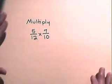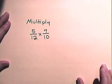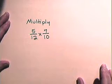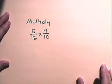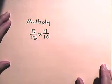Let's begin by doing an example of multiplying proper fractions. Let's multiply 5/12 times 7/10. We're going to multiply the numerators and multiply the denominators. However, we're going to simplify by cancellation first, if possible.